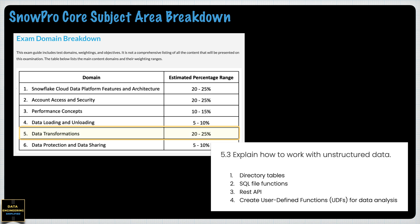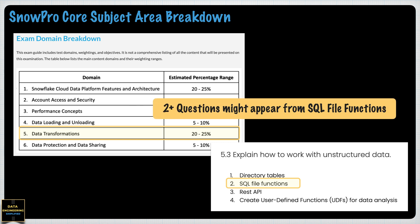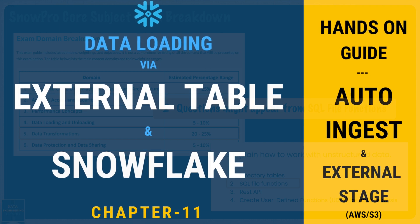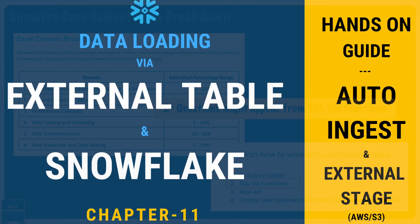SQL file functions are scalar functions as well as built-in Snowflake functions which primarily deal with internal or external stage file locations, be it absolute path, relative path, or pre-assigned URL for individual files available under the Snowflake stage location. There are a handful of file functions available as of Snowflake release 6.28.0, and if you have watched my external and internal stage chapter, it will be much easier for you to respond to these questions correctly.